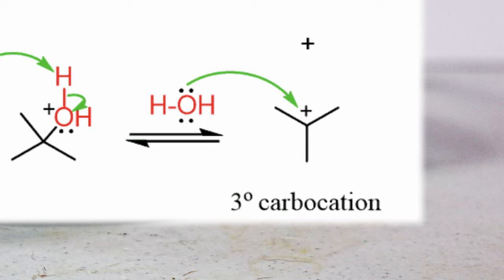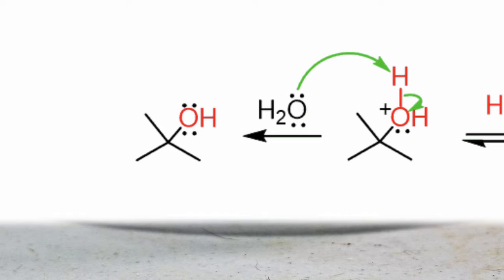The tert-butyl cation, while stable, is still an extremely strong acid. It quickly takes on a water molecule and kicks off one of its hydrogen atoms. This regenerates the acidic proton, which allows the reaction to continue.